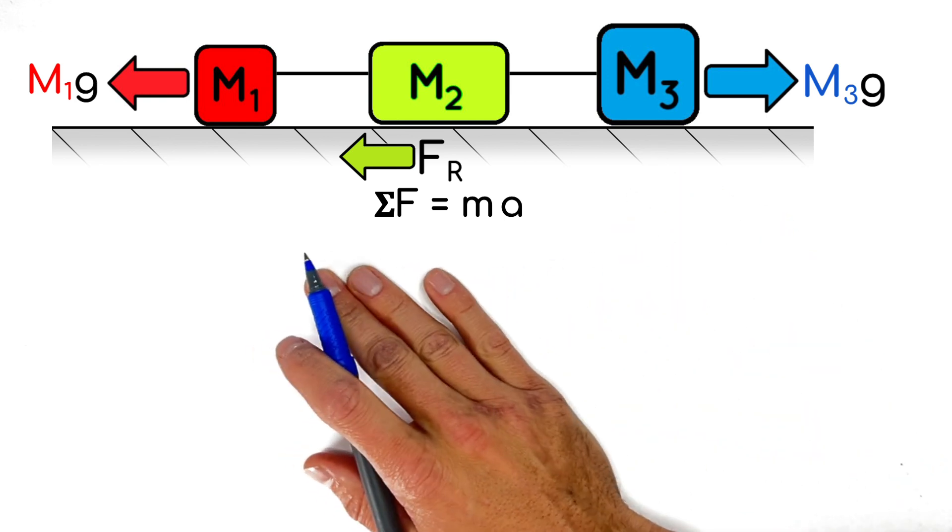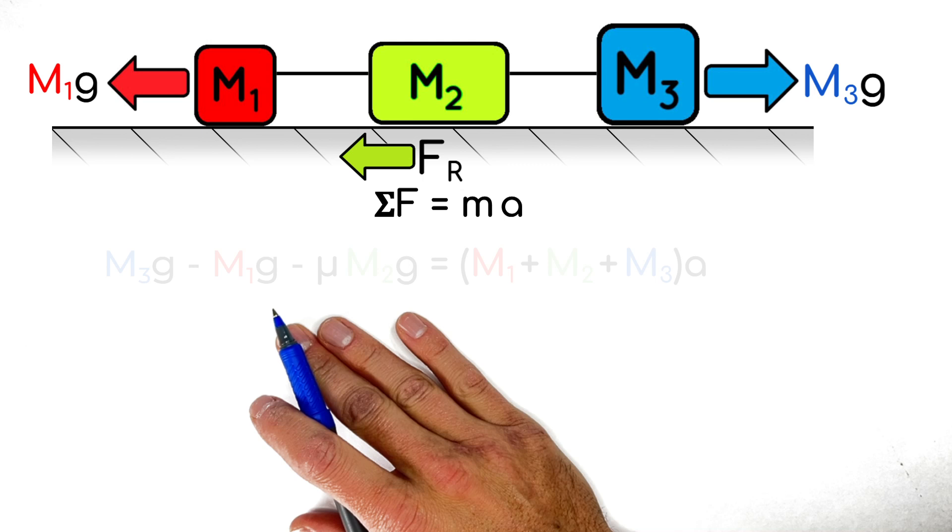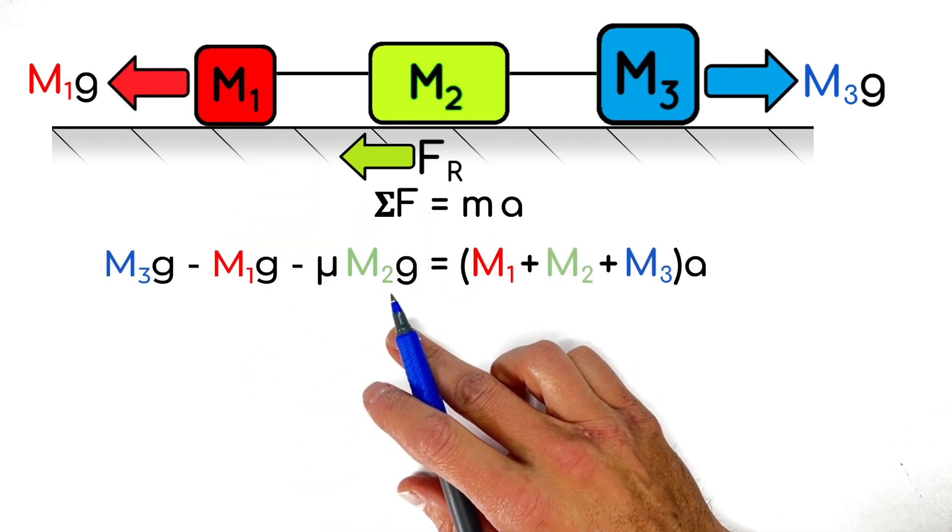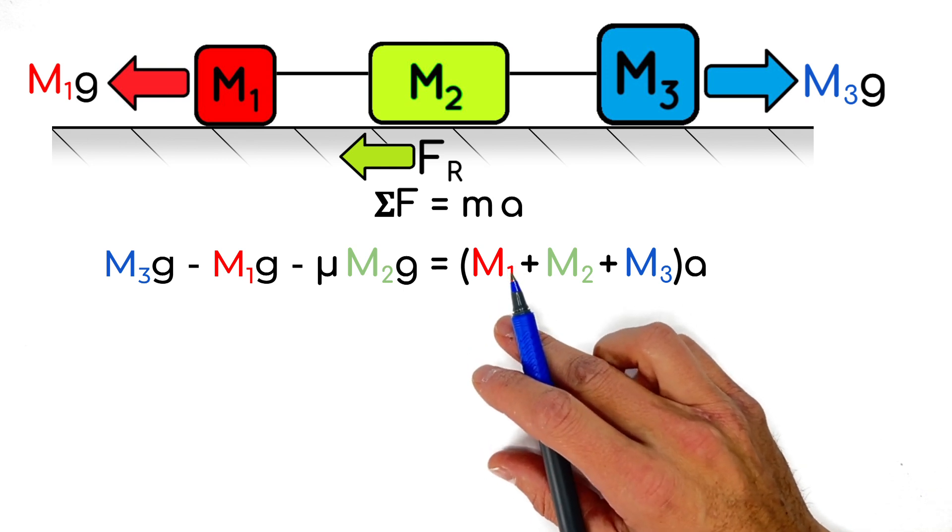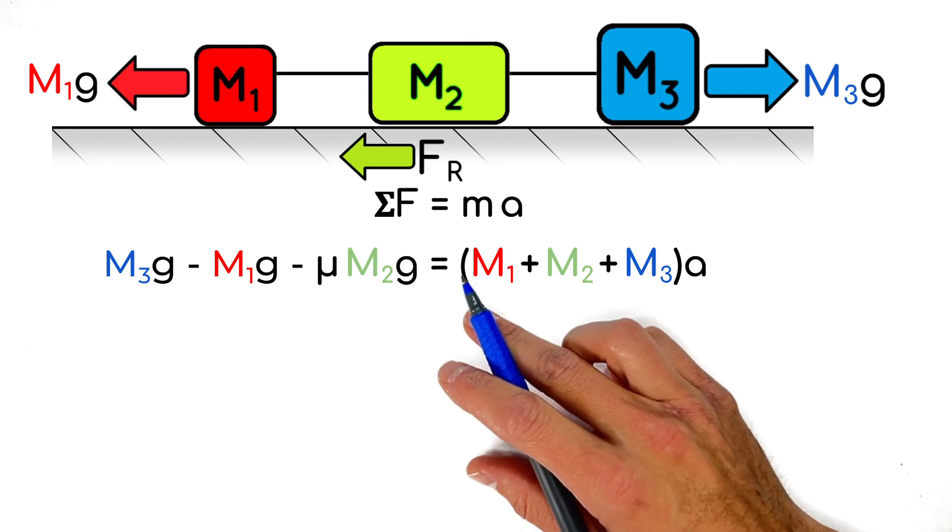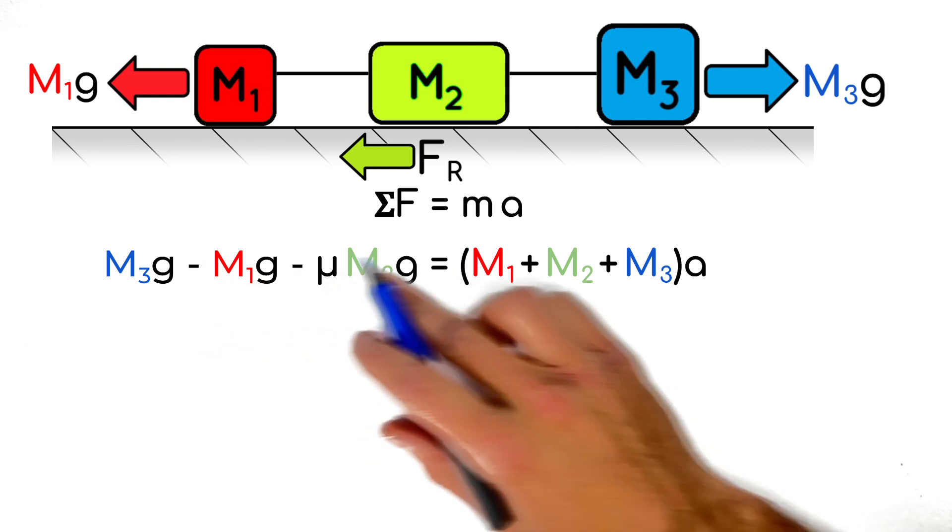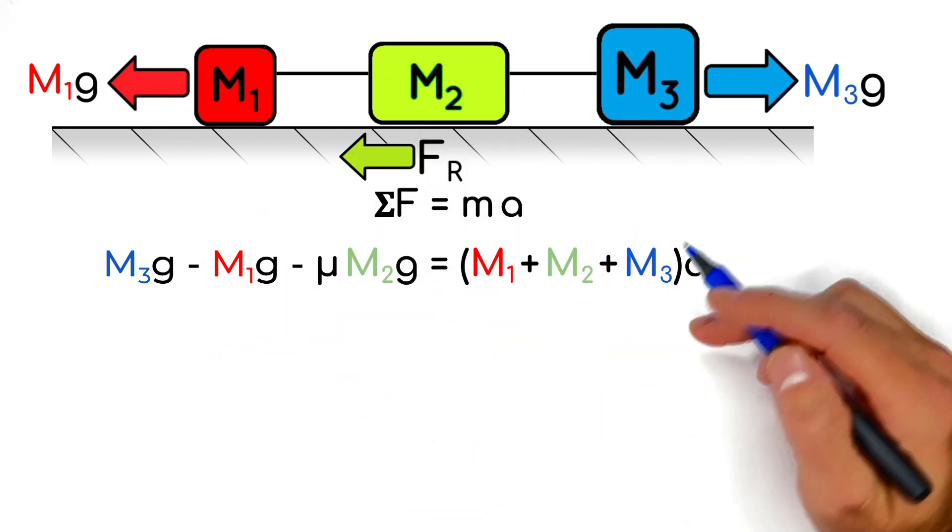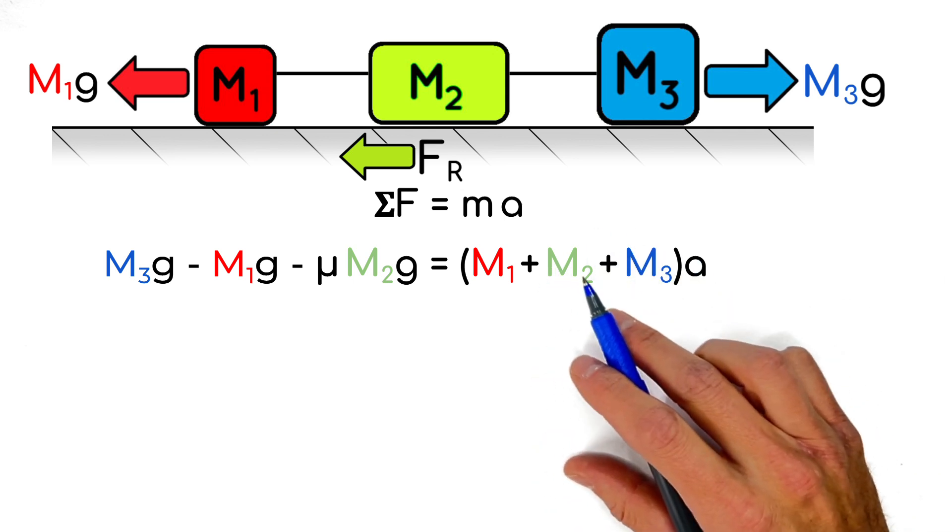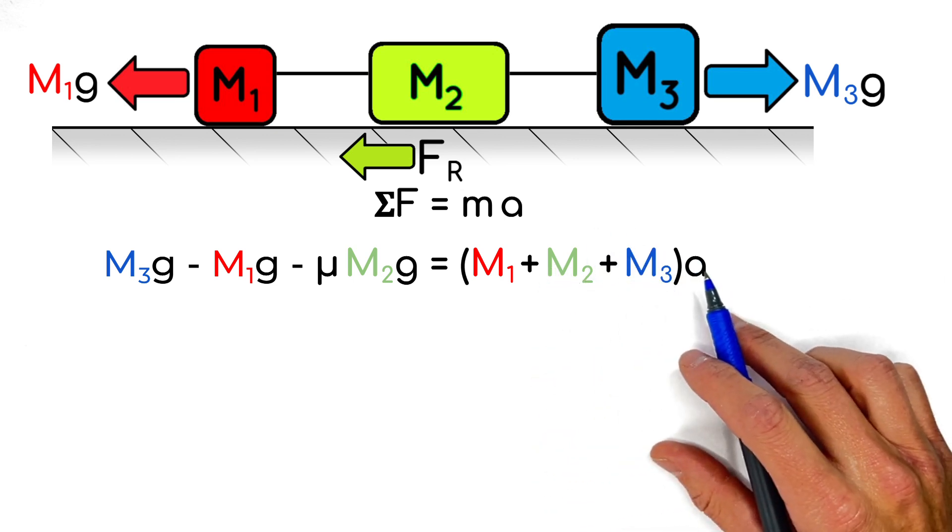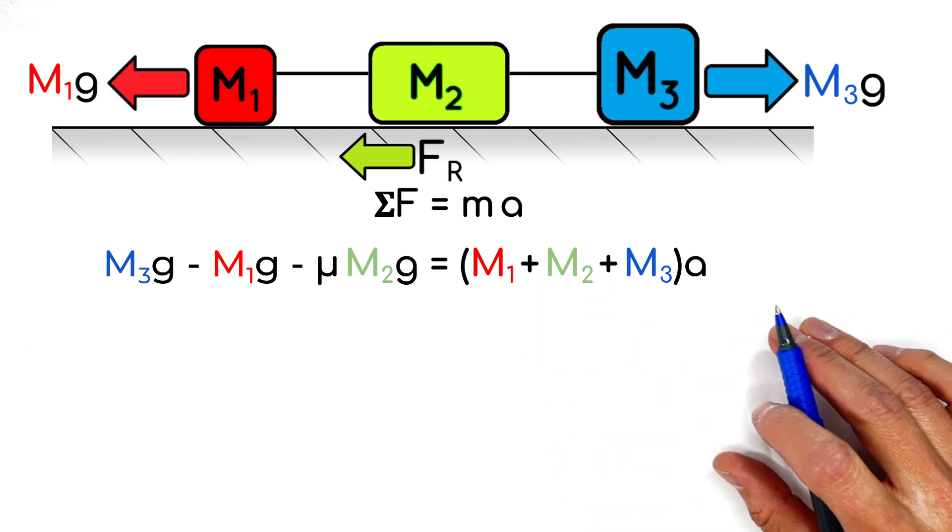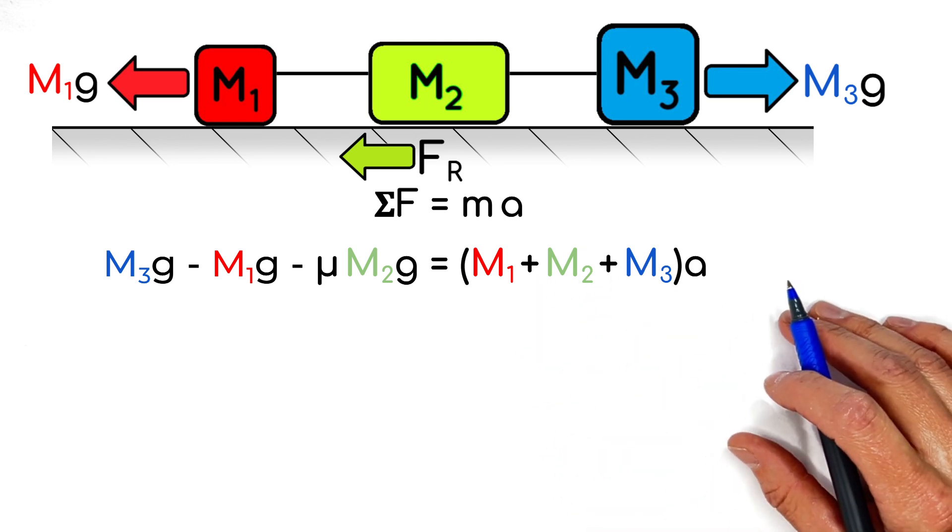So starting right here, we've got M3G to the right, and then we've got M1G acting to the left, so I'm going to say that's negative. And then we've got the friction force between M2 and the table. That's also to the left, so that's going to be in the negative direction. And these three forces are the net force acting on this system of three blocks. So we're going to set that equal to the total mass of our system, that's M1 plus M2 plus M3. And those three blocks are going to accelerate at some rate A. And that's the acceleration we're trying to solve for.